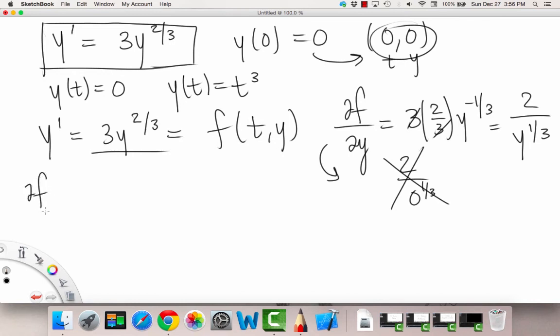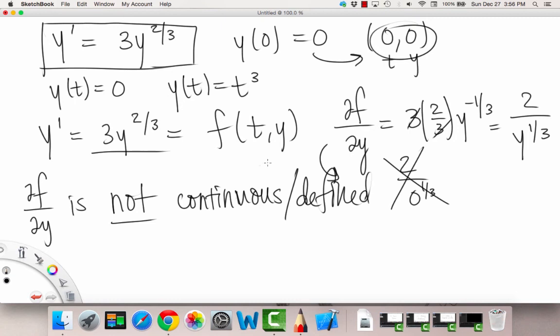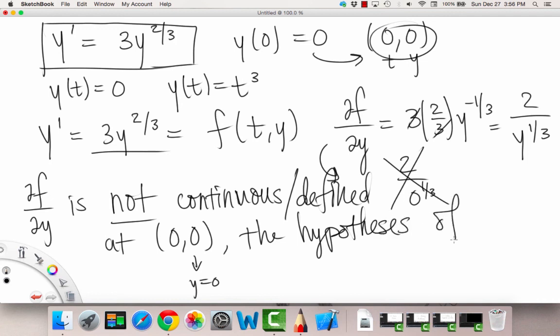So we see we've broken the hypotheses. Not all of the hypotheses are satisfied by our initial value problem. So we could say that because ∂f/∂y is not continuous or defined, right, is not continuous or defined at the point (0,0), specifically when y=0.